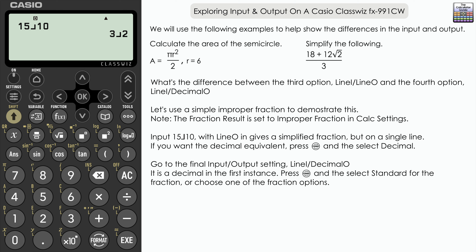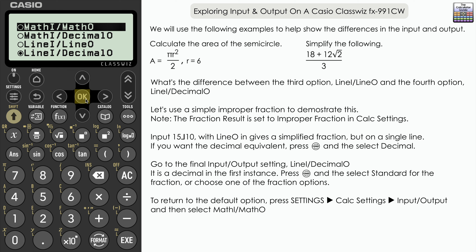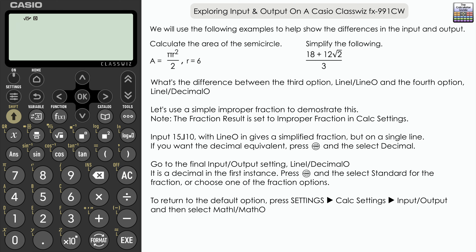So there we go — the four different options available in input output and how they affect the way the calculator gives you the answer. My preferred setting is math input math output, because I can input calculations similar to how they appear in a textbook or exam paper, and I get the exact standard answer first. If I need the decimal, I press format and select decimal. Comment below which input output selection you prefer. Don't forget to like and subscribe for future videos. Thank you very much for watching, and I'll see you next time on the calculator guide.